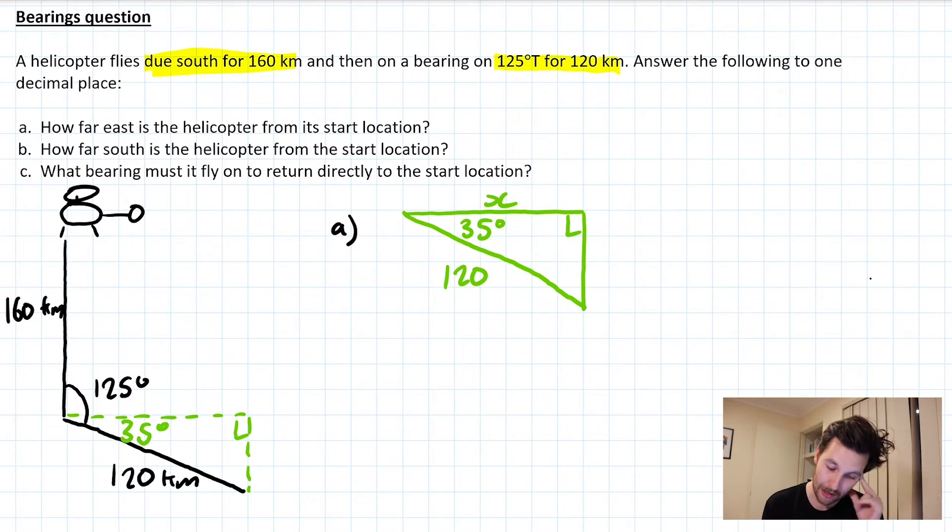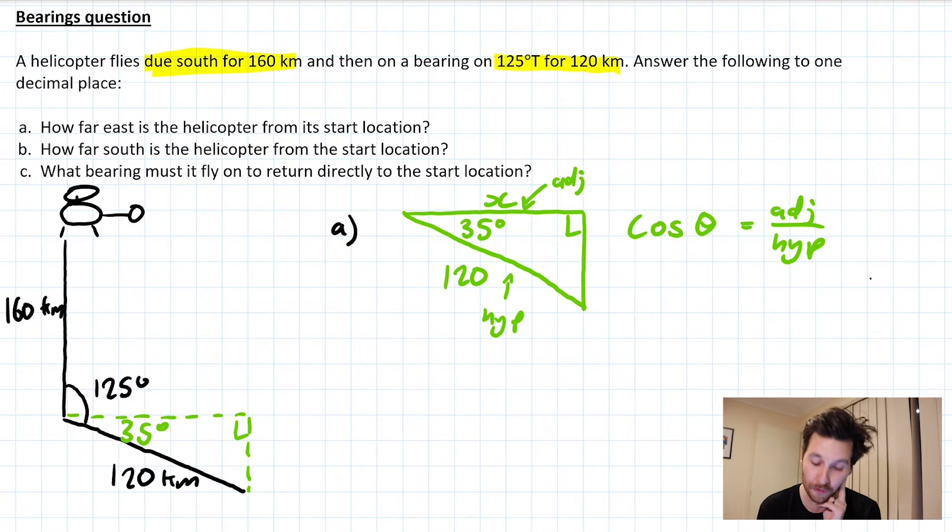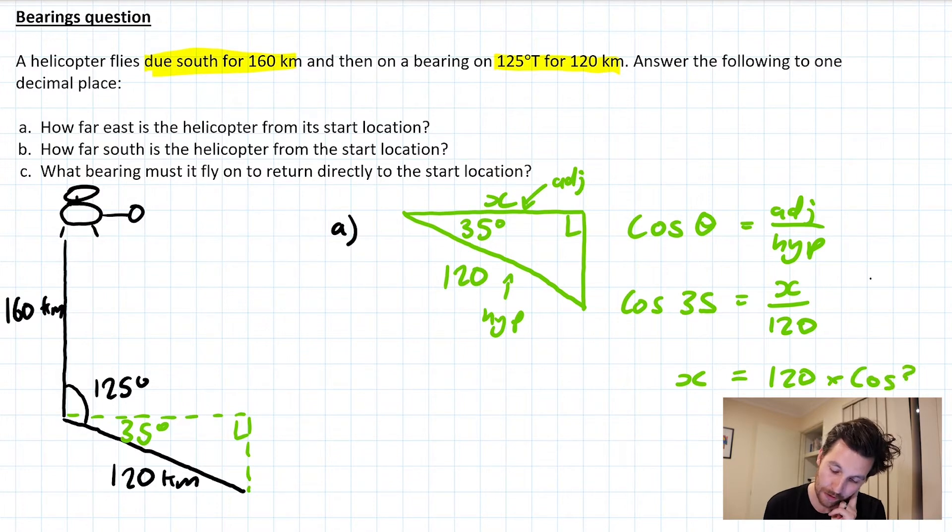I need to choose the correct ratio for this triangle. I've been given the hypotenuse. I'm interested in finding the adjacent, which means I'm going to use the cosine ratio. So cosine of the angle equals the adjacent over the hypotenuse. I'll now fill in what I know from the diagram: cos 35° = x/120. A little bit of rearranging, multiplying both sides by 120, will give me x = 120 × cos 35°.